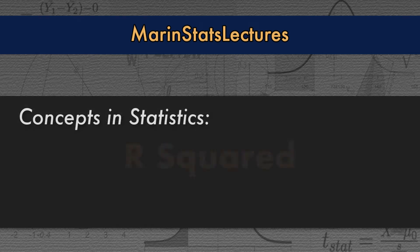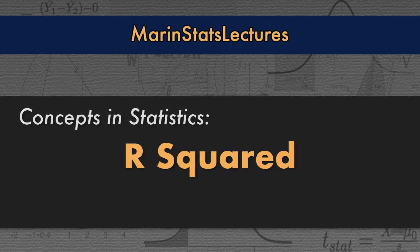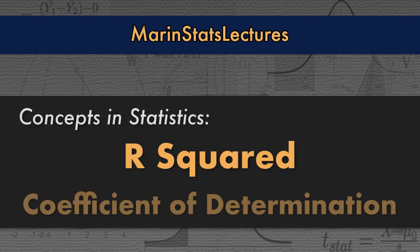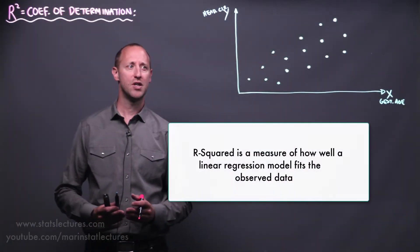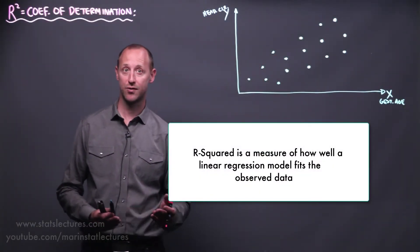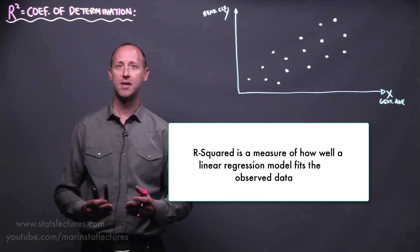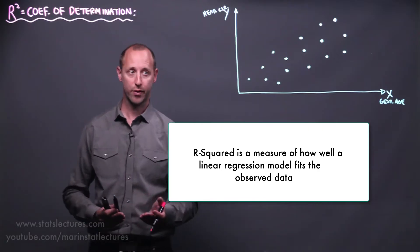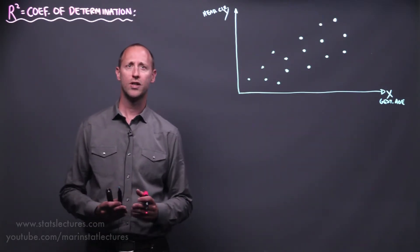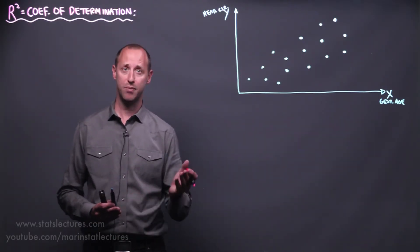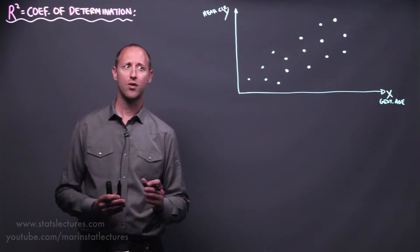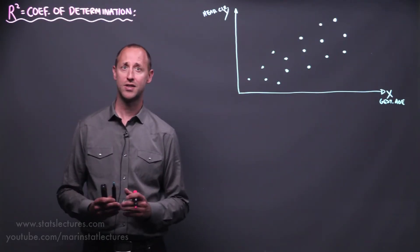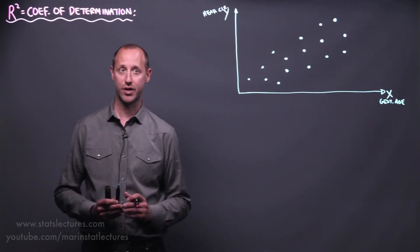We're going to talk about r-squared, also known as the coefficient of determination. R-squared is a measure of how well a model fits observed data in the case of linear regression. We're going to talk in terms of simple linear regression for simplicity, although the concept applies to multiple linear regression as well.